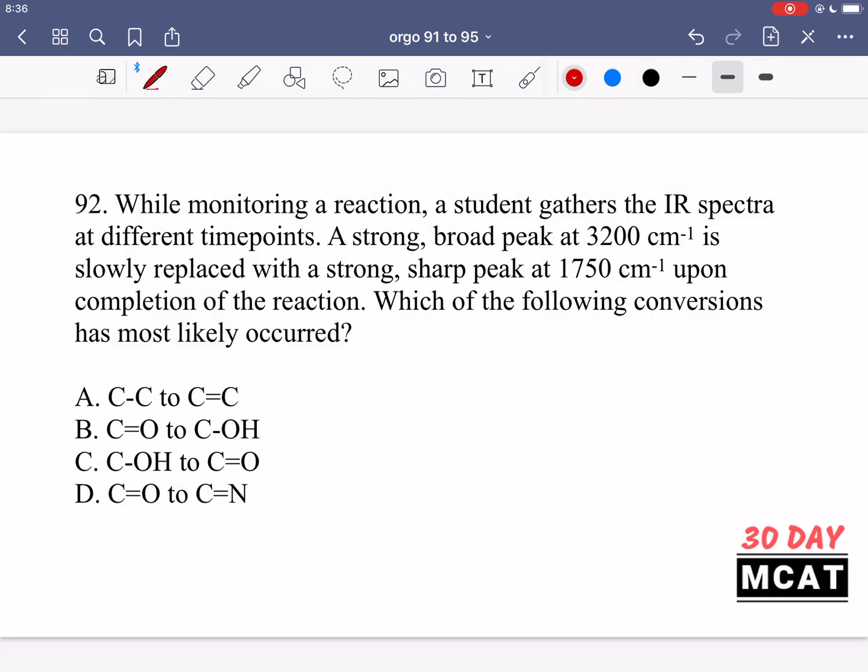In question 92 it says while monitoring a reaction a student gathers IR spectra at different time points. A strong broad peak at 3200 is slowly replaced with a strong sharp peak at 1750 upon completion. Which conversion has most likely occurred? You need to know some key points that show up in IR spectra. These two are ones you should definitely know.